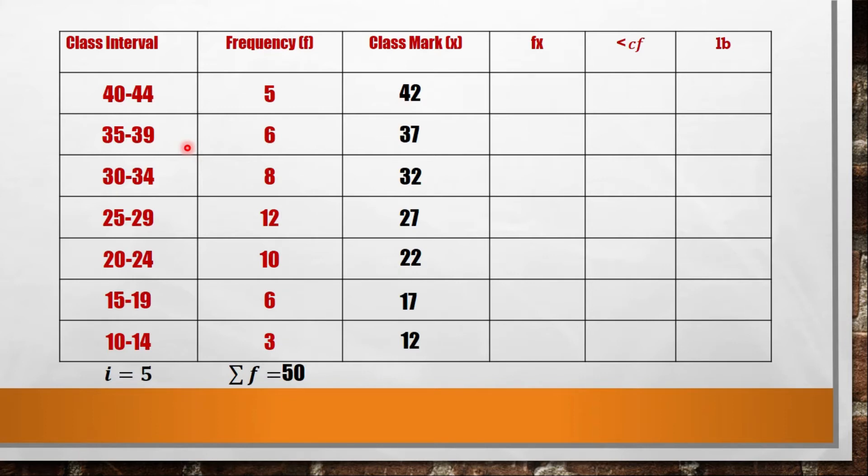Now if we are done with the class mark or x, let's proceed to the next column which is fx. This means you multiply f and x. So 5 times 42 you have 210, 6 times 37 is 222, 8 times 32 you have 256, 12 times 27 you have 324, 10 times 22 you have 220, 6 times 17 is 102, while 3 times 12 is 36. Now we get the summation of fx: 210 plus 222 plus 256 plus 324 plus 220 plus 102 plus 36. You have the summation of fx equals 1370. Take note of that.